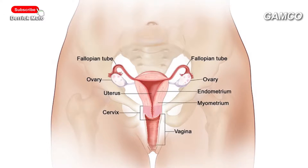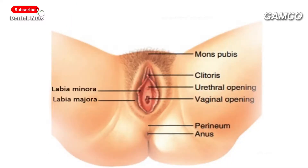Now let us look at the external genitalia, which are collectively known as the vulva. These are the outermost parts of the female reproductive system. Number six: labia majora, nicknamed the large lip. It is simply an outer fold of skin whose function is to enclose and protect the other external genitalia. It has sweat and sebaceous glands which produce lubricating secretions.